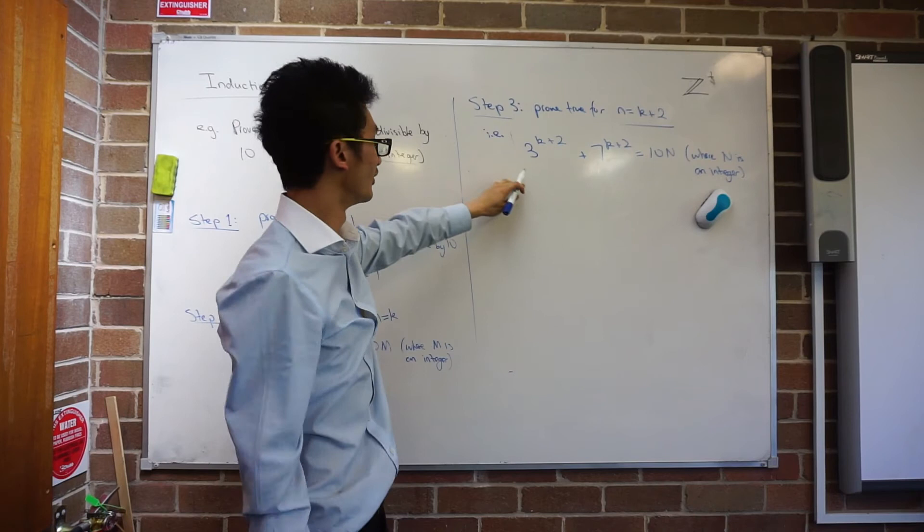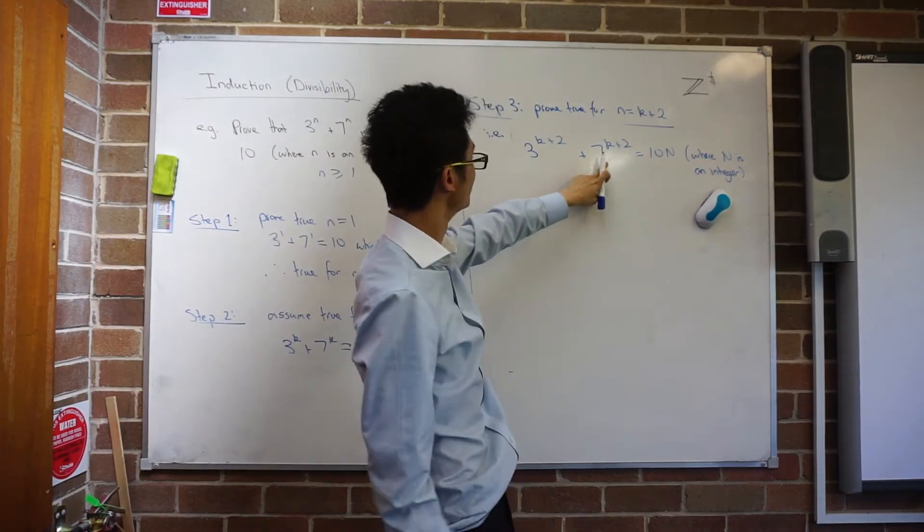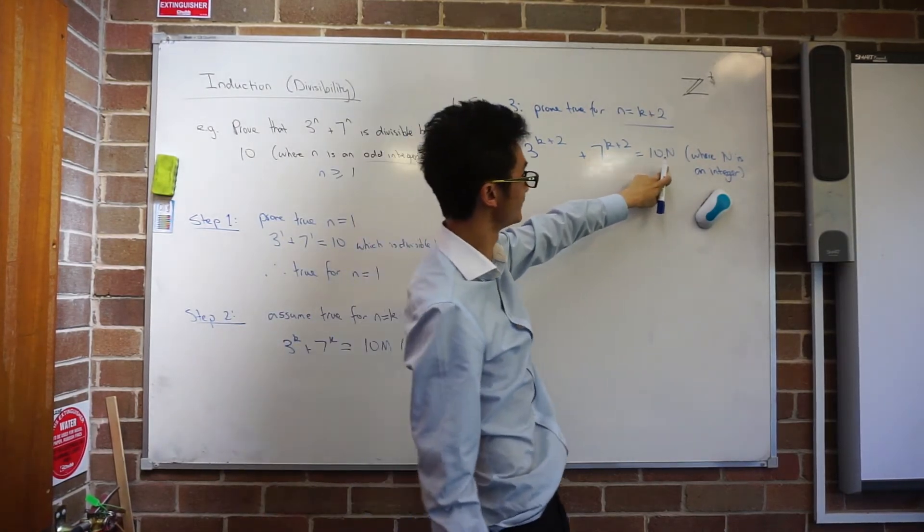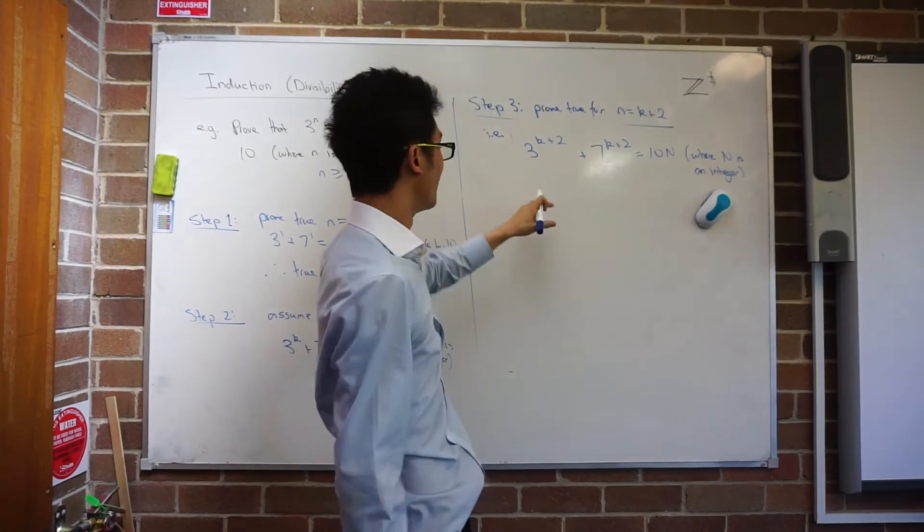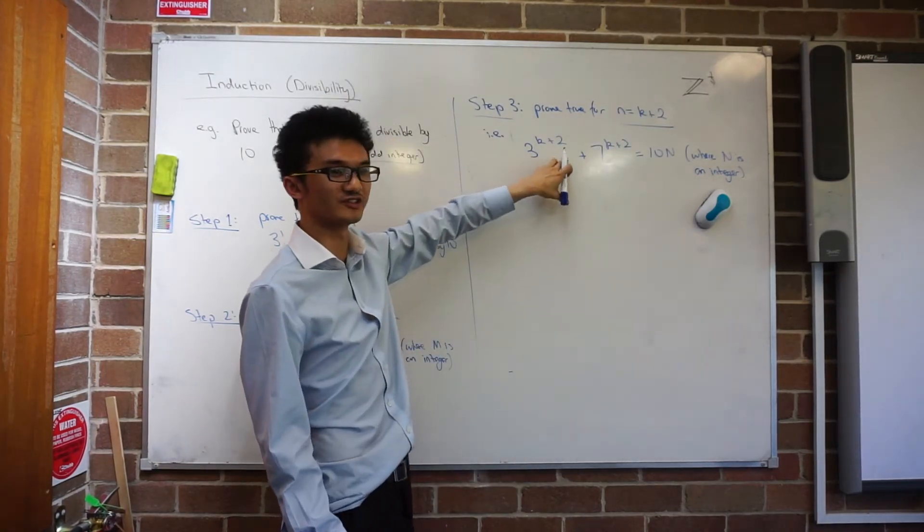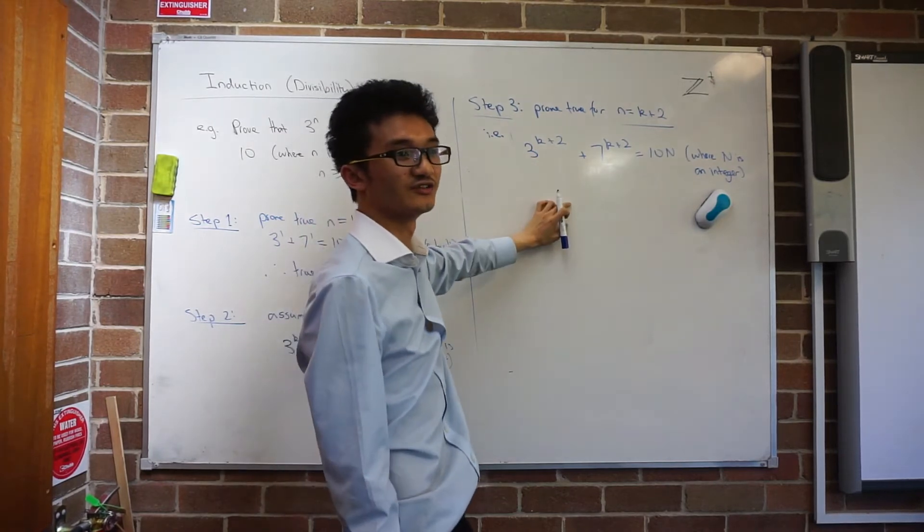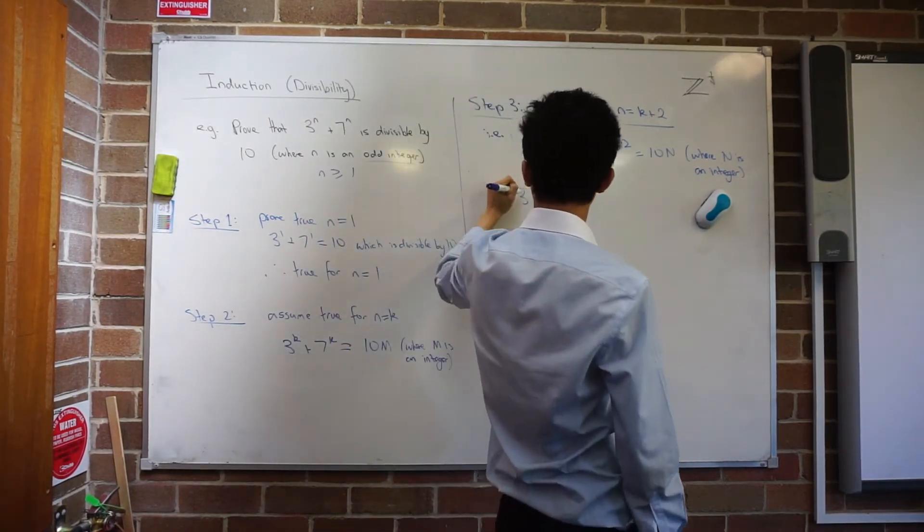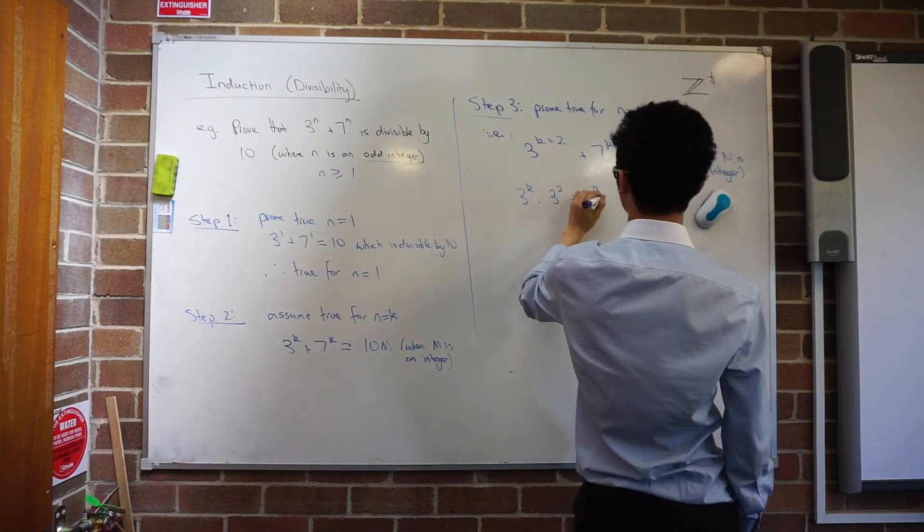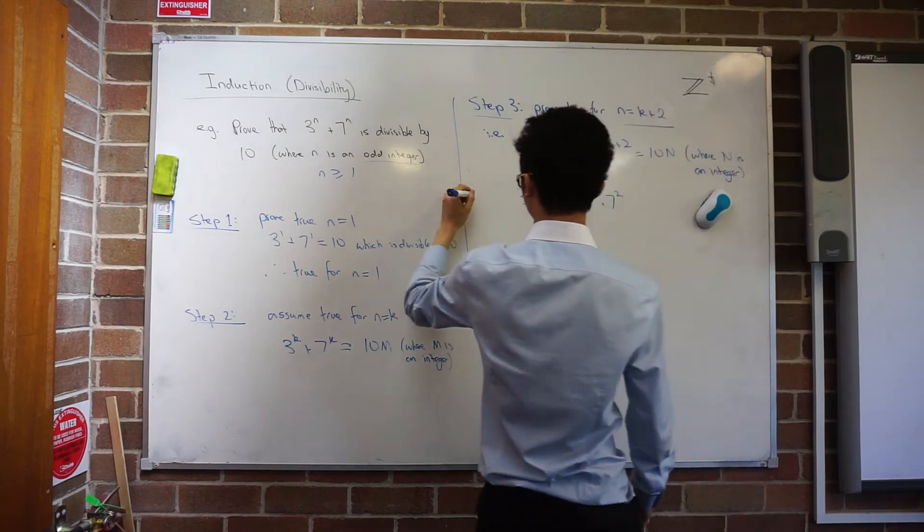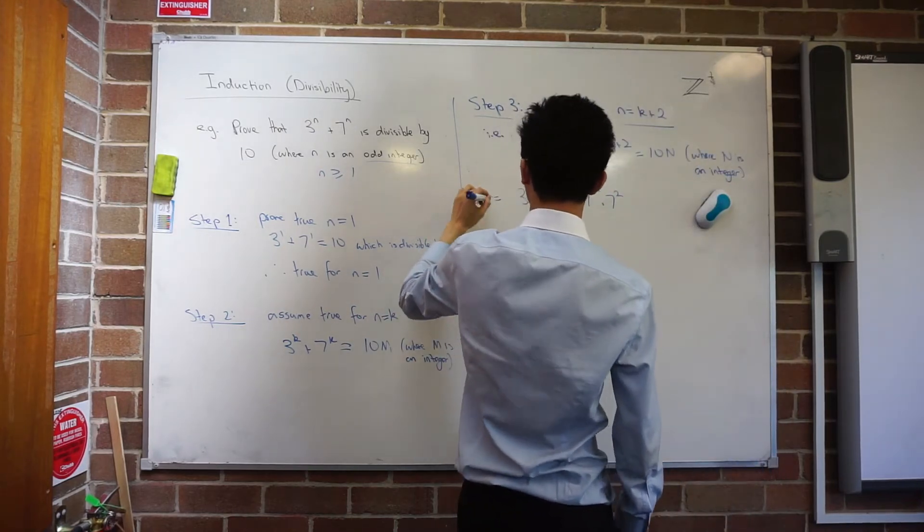Let's look through it together. We've got over here, I've got 3 to the k plus 2 plus 7 to the k plus 2 equals 10n, where n is some integer. How could I rewrite this so I've got some different index notation here? We could say 3 to the k times 3 squared plus 7 to the k times 7 squared. Okay, sorry, I should have wrote here that we're starting with LHS. We always start with one side.